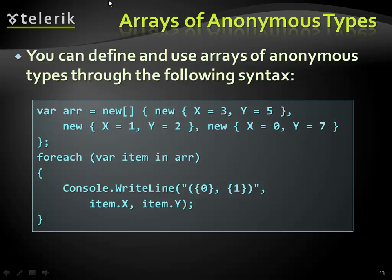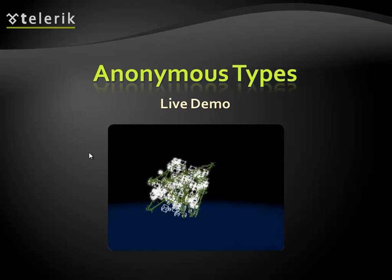Another example: we have an array of anonymous types. We define the array using 'var' and 'new' with square brackets, initializing each array object with the 'new' keyword. We can then traverse through them and print them out. Let's see it in code.